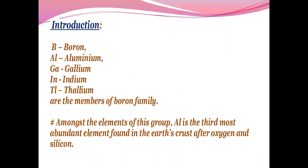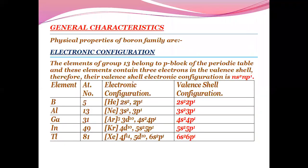Boron, Aluminium, Gallium, Indium, and Thallium are the members of the Boron family. Amongst the elements of this group, Aluminium is the third most abundant element found in the Earth's crust after Oxygen and Silicon.